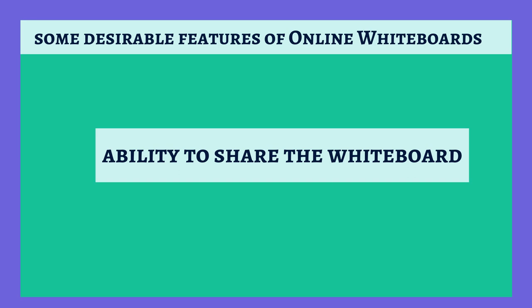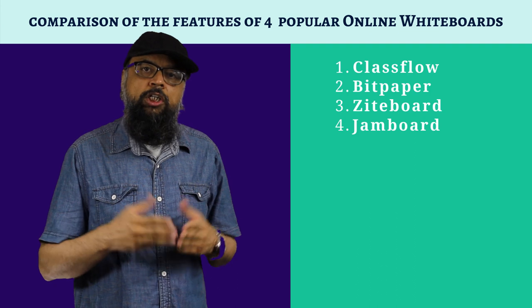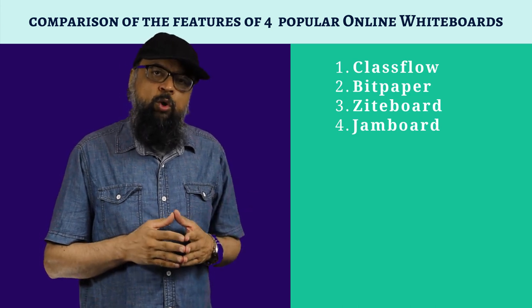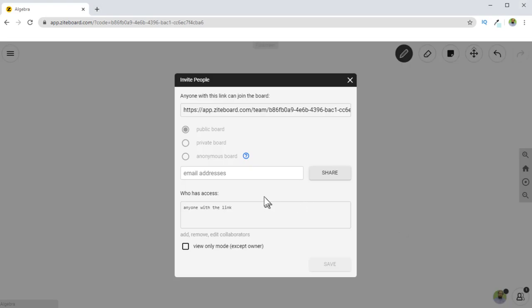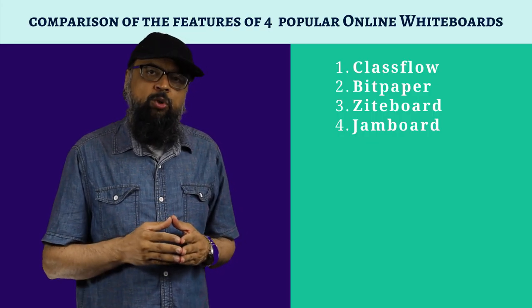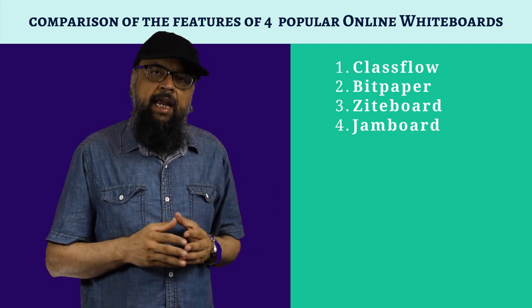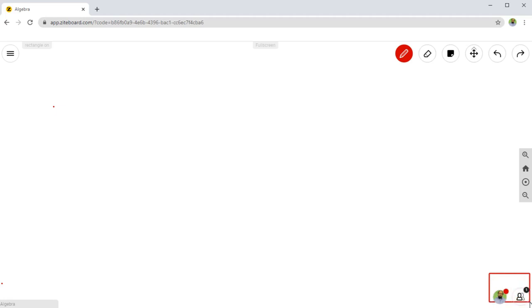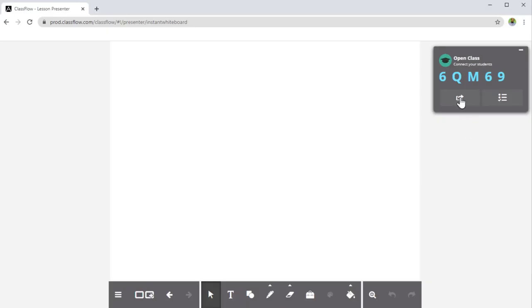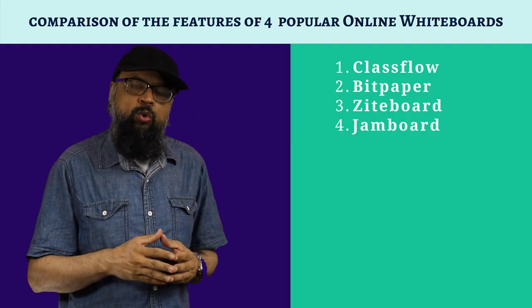Another desirable feature is the ability to share your whiteboard with team members. These are sometimes called shareable or collaborative whiteboards. For example, in Ziteboard, you have the option to invite other people who can join by using a link, or you can type their email and send them an invitation. Your team members are then able to annotate on your whiteboard as well. There are some differences in how screen sharing works — in some whiteboards the screen is instantly shared, while in others like ClassFlow, you need to explicitly send the screen to your students.